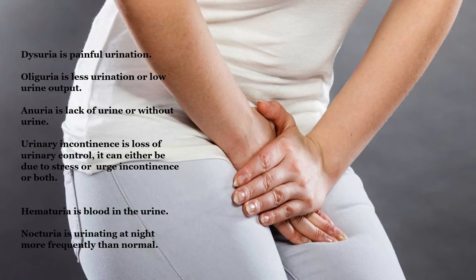Here are some more terms. Dysuria is painful urination — it literally means difficult urination since dys refers to difficult. Oliguria means scant or low urine output, while anuria is without urination. Urinary incontinence means loss of control of urination and can be due to stress or urge incontinence or both. Hematuria is blood in the urine, and nocturia is urinating more frequently at night than normal.